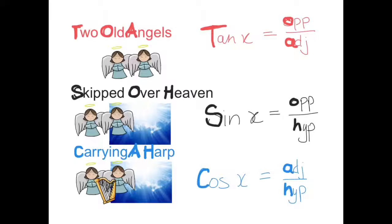And if we learn these three formulae, these three ratios, then it will help us whenever we go to find missing sides and angles. And sometimes this little rhyme, this mnemonic, two old angels skipped over heaven carrying a harp, can really help us to learn the three ratios.